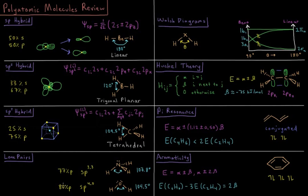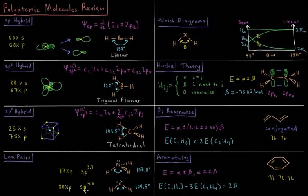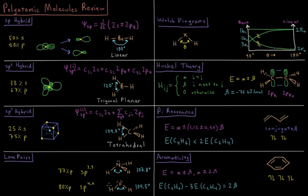This gives us orbitals which are either 77% p sp3.3 orbitals or 80% p sp4.0 orbitals, giving us more and more p character as this bond angle approaches closer and closer to 90 degrees.